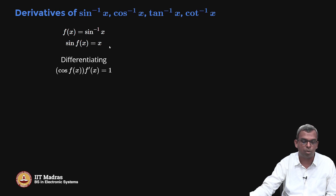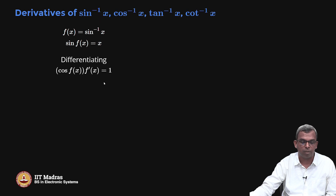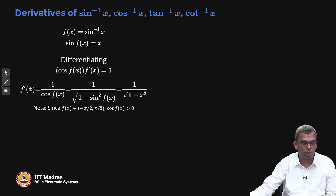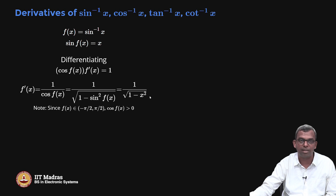If you take the derivative on both sides, by the chain rule, you are going to get cos f of x times f prime of x equals 1. Derivative of x is 1, derivative of sin f of x is cosine f of x times f prime of x. From here you get f prime of x equals 1 by cosine f of x, and that is 1 by root of 1 minus sin square f of x. And sin f of x is just x, so it is 1 by root of 1 minus x square.